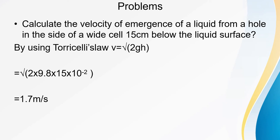You can use Torricelli's law of efflux: v equals root of 2gh, because atmospheric pressure and the pressure at the topmost surface are equal. Substituting g = 9.8 and h = 15 cm = 15 × 10⁻² m, we get root of (2 × 9.8 × 15 × 10⁻²), which simplifies to 1.7 meter per second.